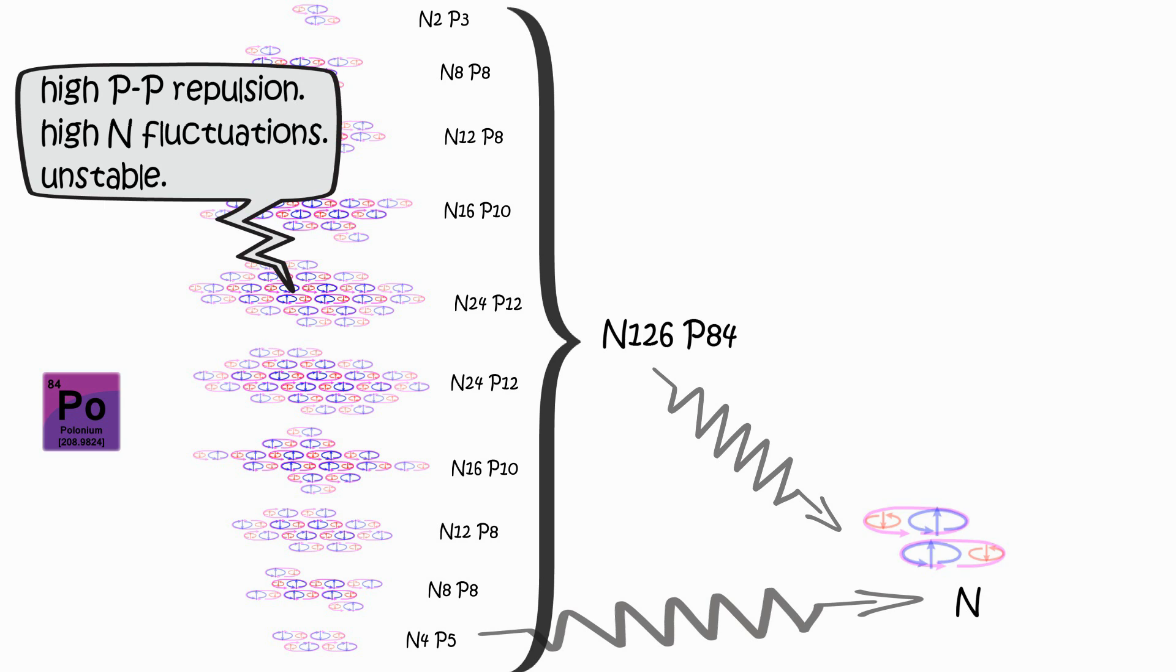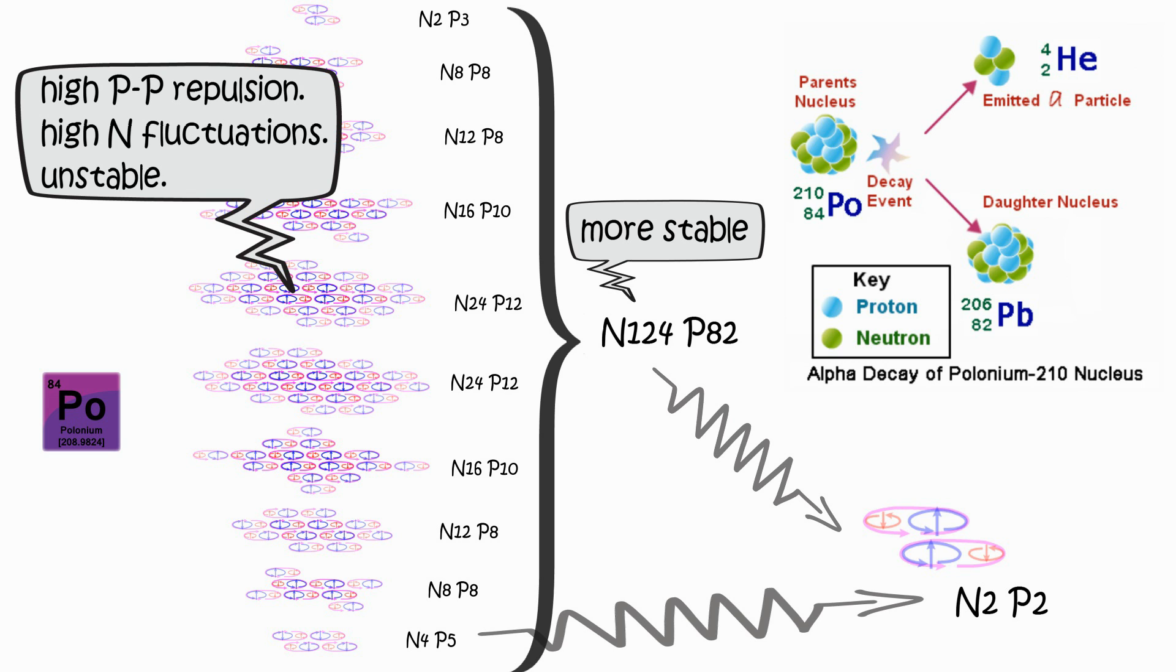With some disturbance, polonium-210 ejects 2 neutron, 2 proton, an alpha particle, becoming led-206.